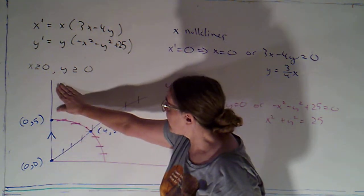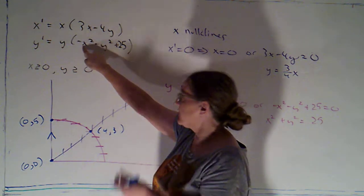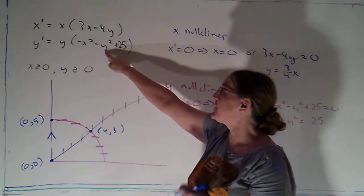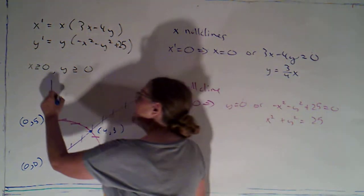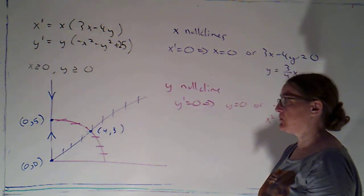Now, if I'm above five, this factor y is still positive. Negative x squared is still zero. But now negative y squared is bigger, has a bigger absolute value than 25. So now, y prime is negative, so that we're going down.